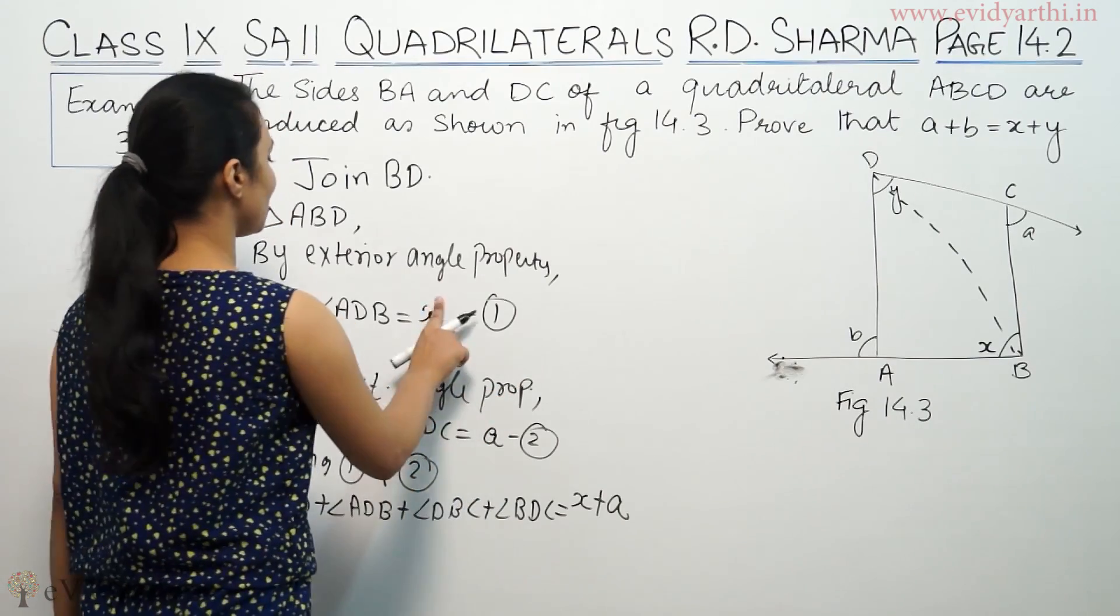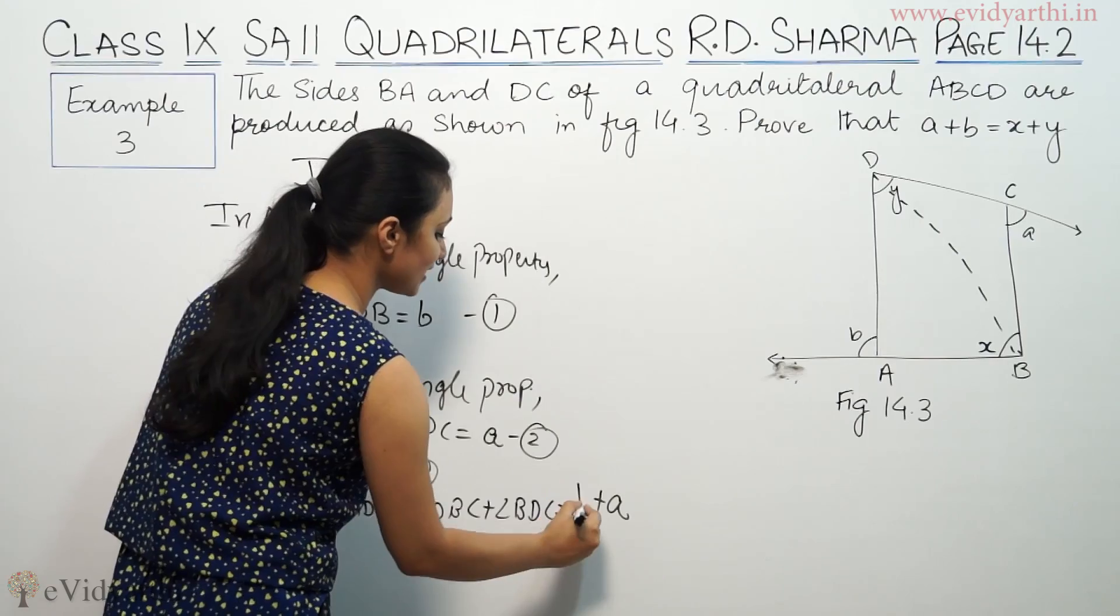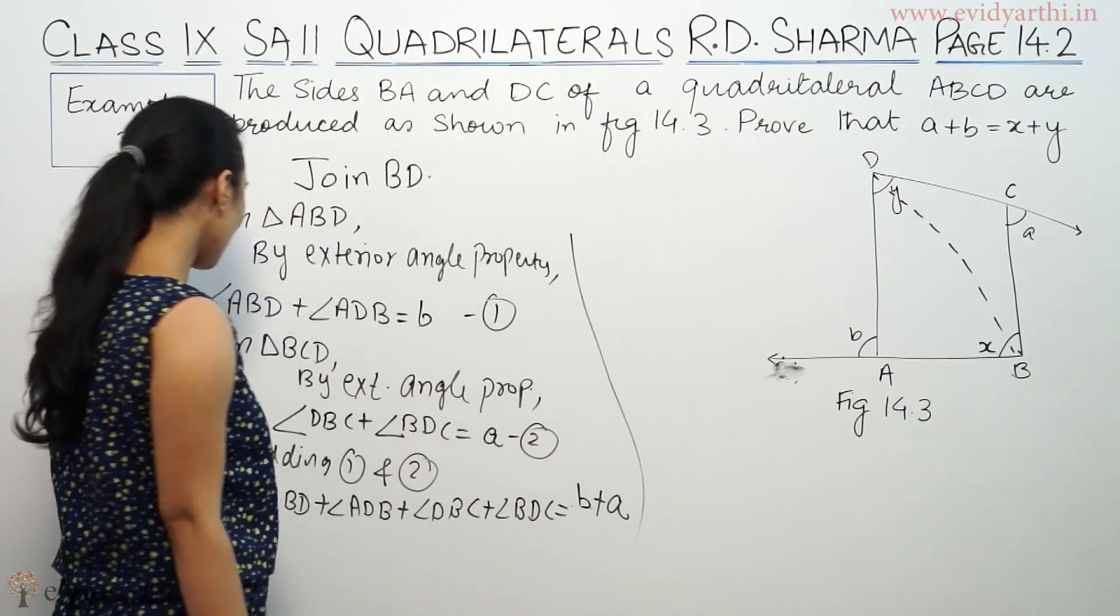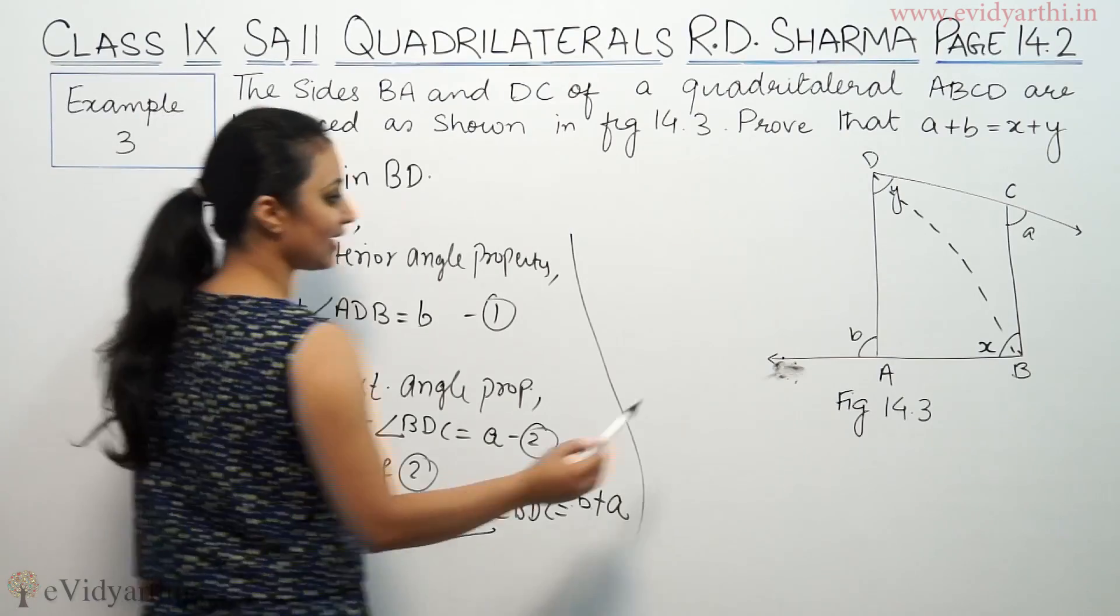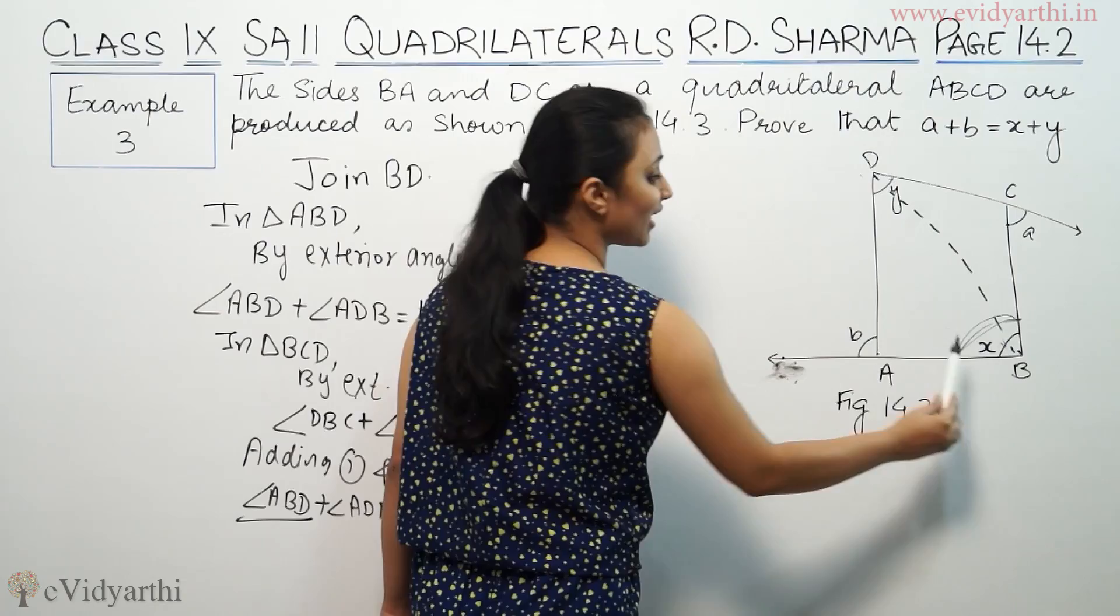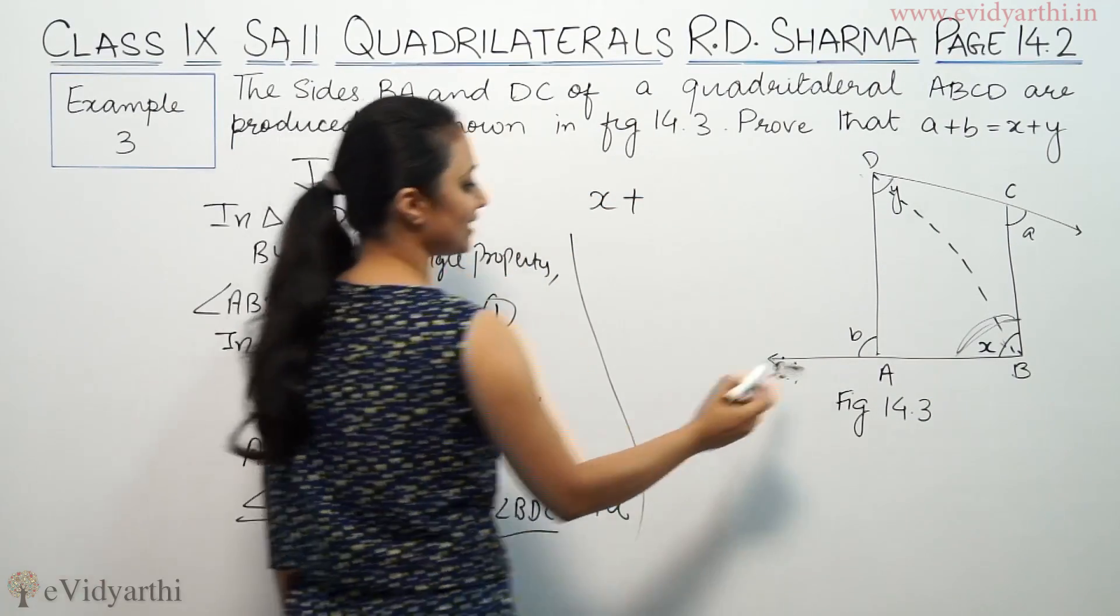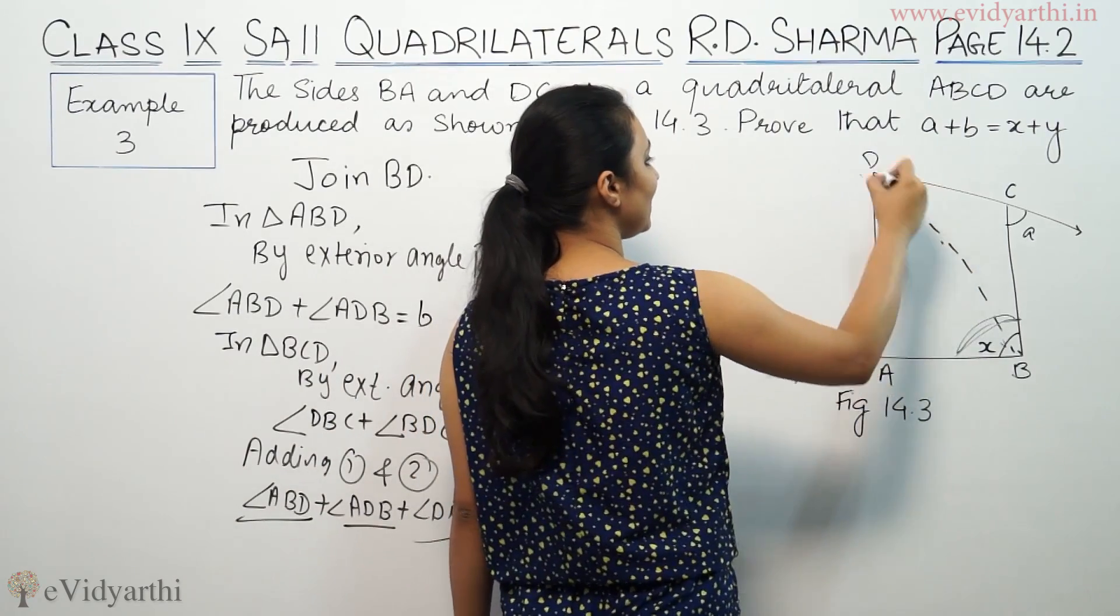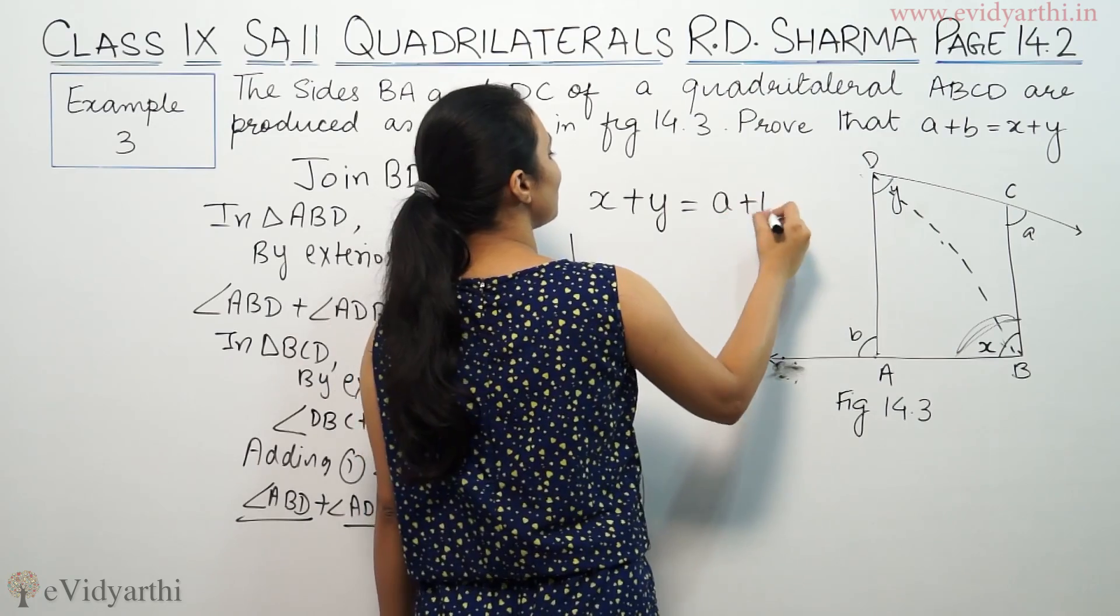This is angle ABD plus DBC, which is angle B. So X plus Y is equal to A plus B.